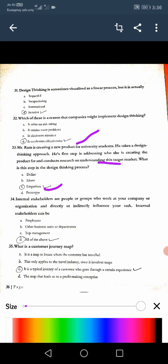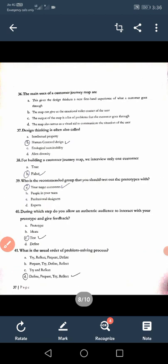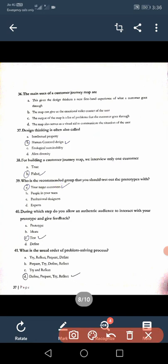Thirty-third: Mr. Ram is creating a new product for his university students, then his first step is addressing who is creating the product and conducts understanding, so it is empathize. Thirty-fourth: Internal stakeholders are the people or group who work at your company or organization directly or indirectly influence your task. Internal stakeholders can be employees, business department, top management, all the above, so it is all the above. Thirty-fifth: What is the customer journey map? C, it is a typical journey customer goes through a certain experience. Thirty-sixth: The main use of the customer journey map is, the map gives the design thinkers a near first-hand experience of what the customer goes through. The map can give us the emotional roller coaster, then output of map is a list of problems. The map also serves as visual aid, so it is A.